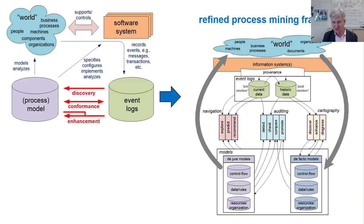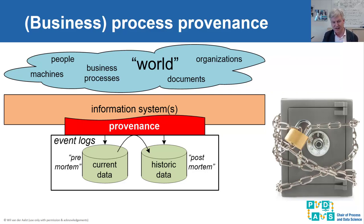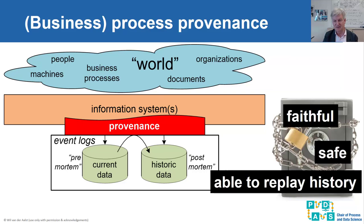Looking at the top part, we have a real world supported by information systems that record things that have happened. Sometimes this can be very complicated — for example, in an SAP HANA-based system, you could have 800,000 different tables with information. The term provenance emphasized on this slide highlights that in many situations you want the recorded data to faithfully represent how things really developed — the data should be faithful, safe, and allow you to replay history, with trails corresponding to real behavior.